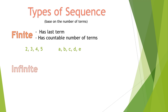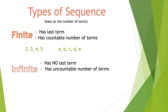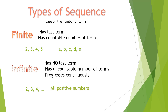Another type based on the number of terms is the infinite sequence. An infinite sequence has no last term, it has an uncountable number of terms because it is infinite, and it progresses continuously. For example: 2, 3, 4 followed by ellipses — meaning after 4, there are more numbers following. Since it is not indicated how many, there is no last term. Another example: all positive numbers — no last term, uncountable, and it progresses continuously with no end.